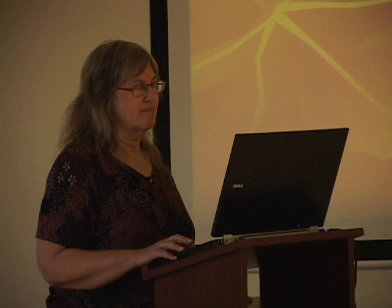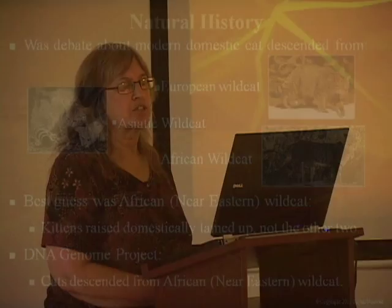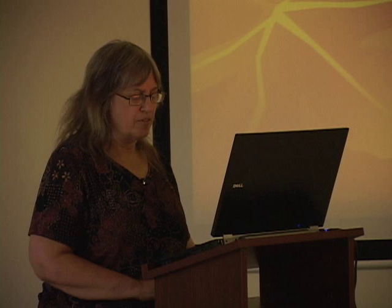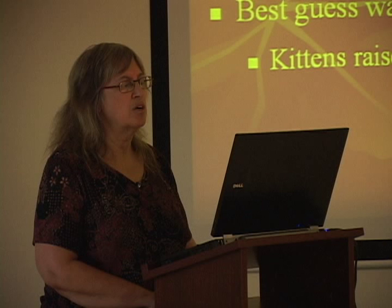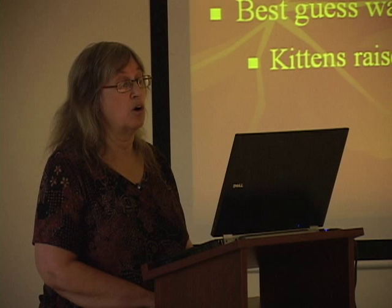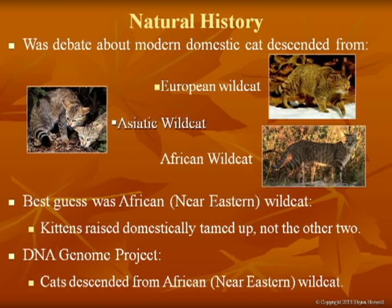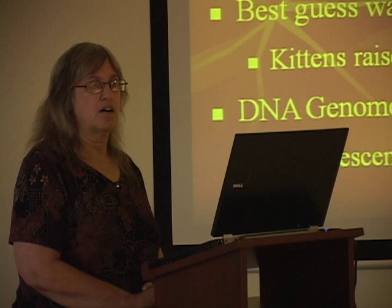The domestic cat — it's been debated about whether they were descended from the European wildcat, the Asiatic wildcat, or the African wildcat. For many years, as you can see from these pictures, they look a lot like domestic cats, and there is a large genetic overlap. The only way we could tell was to raise kittens as domestic cats, and the only ones that would actually tame down were the African wildcat. And lo and behold, when they did the cat genome project, they found that domestic cats are descended from the Near Eastern or the African wildcat. The behavior did reflect the final DNA analysis.